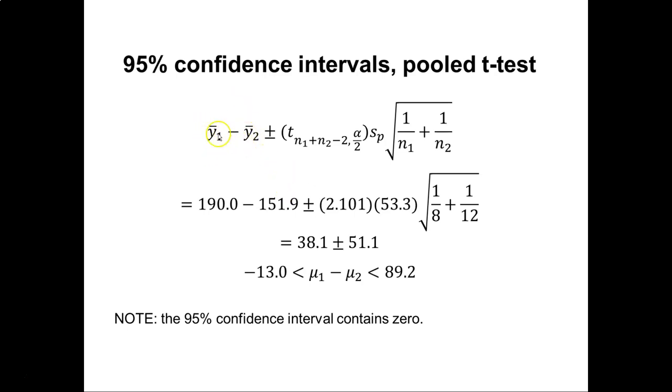We can take the difference between the two, let's call it y bar sub 1 and y bar sub 2, and we can take the plus or minus some value of t. And again, we're going to get this value of t from the t-table. n1 plus n2 minus 2 is our degrees of freedom. Alpha divided by 2 is our level of significance. And then we can multiply that by everything that's in the denominator within the test statistic calculation. That is the pooled standard deviation, and then one over both of the sample sizes.